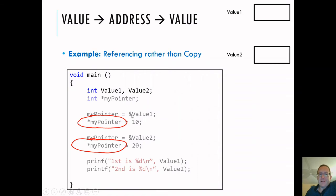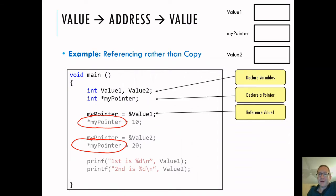I say my pointer is equal to the reference to value one. So I'm going to point to value one. So here I'm making two new variables. I'm making my pointer. I'm going to reference value one. It's pointing now. My pointer is now pointing to value one.